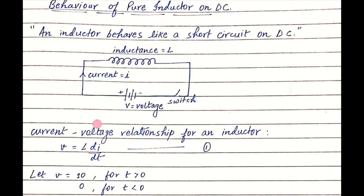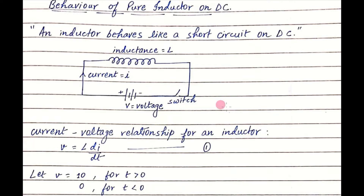Now you must know the current-voltage relationship for an inductor. Voltage V is equal to L di/dt, where the voltage is the DC voltage connected across this inductor, L is the inductance, and di/dt is the rate of change of the current flowing through the inductor. So the rate of change of current is important.